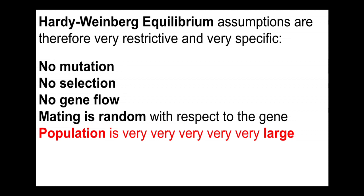The Hardy-Weinberg assumptions can be approximately valid. Populations don't have to be infinitely large — they just have to be fairly large. A couple thousand or a couple hundred thousand individuals is probably large enough. Mating doesn't have to be perfectly random; it just has to be random with respect to the gene of interest.